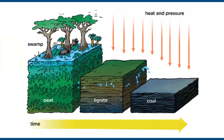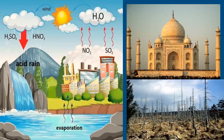The coal formation process involves dead and decaying matter slowly decomposing over millions of years, first forming lignite, then with moisture removed, forming coal. Regarding acid rain: nitrogen dioxide and sulfur dioxide combine with water in the environment, producing H2SO4 and HNO3. Acid rain is so dangerous it has faded the color of the Taj Mahal, which was built of pure white marble, and it also affects trees.